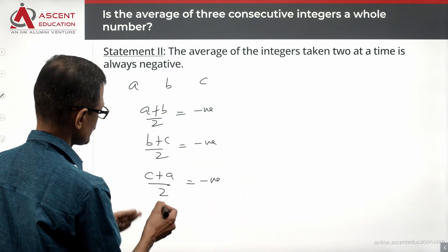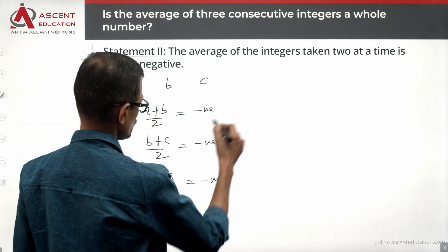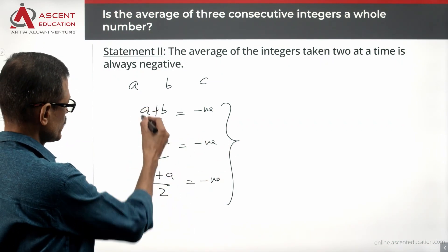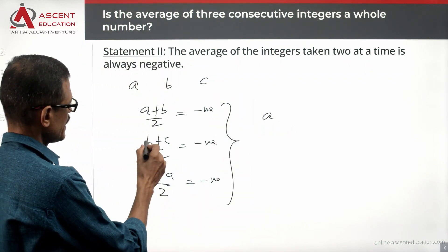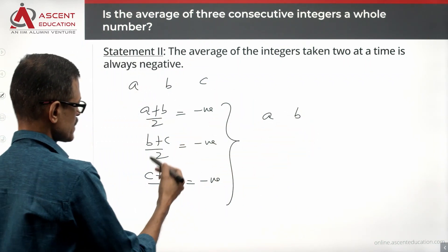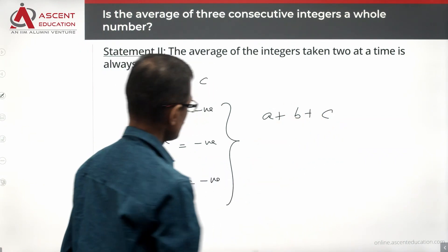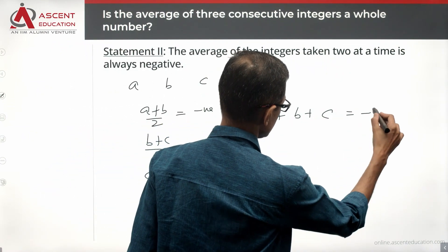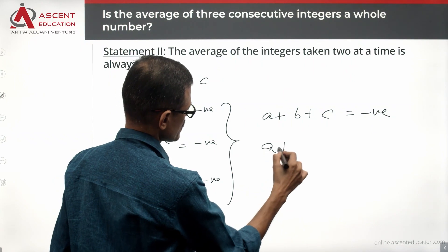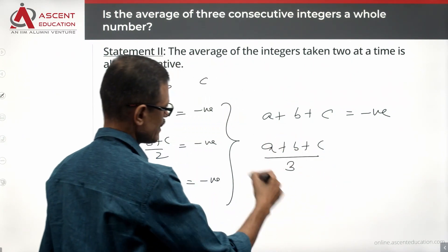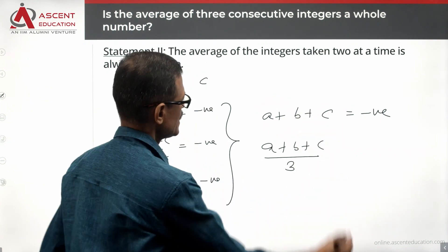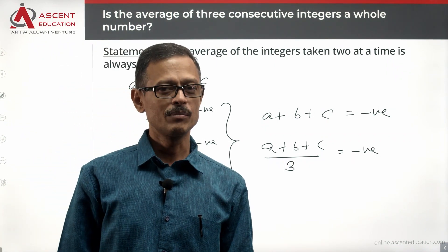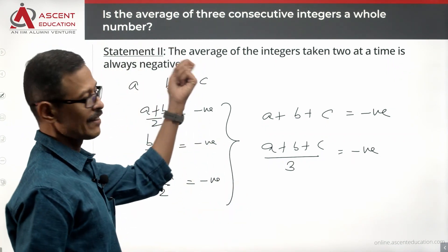What we do is add all three expressions together. a over 2 plus b over 2 gives us the first pair; b over 2 plus c over 2 gives us the second; c over 2 plus a over 2 gives us the third. Adding them all: a over 2 plus a over 2 gives a, b over 2 plus b over 2 gives b, and c over 2 plus c over 2 gives c. So a plus b plus c equals a negative number. If the sum is negative, the average a plus b plus c divided by 3 is also going to be negative. If the average is negative, then it certainly is not a whole number, since whole numbers cannot be negative.